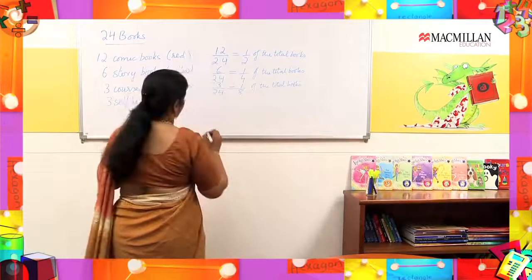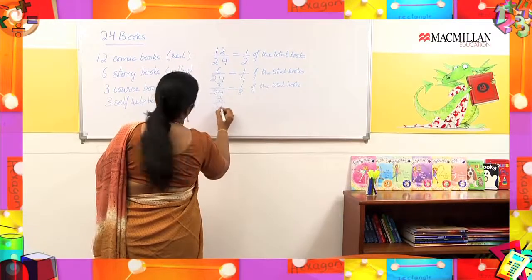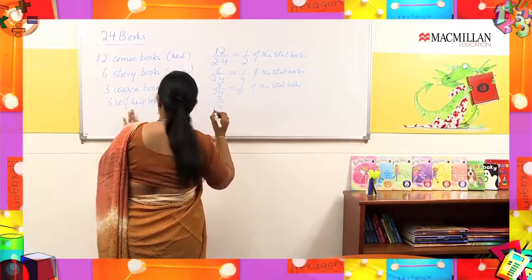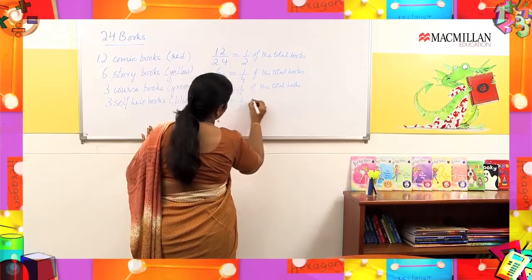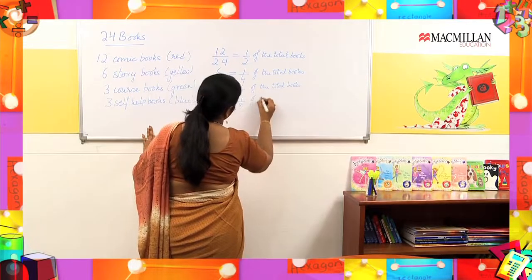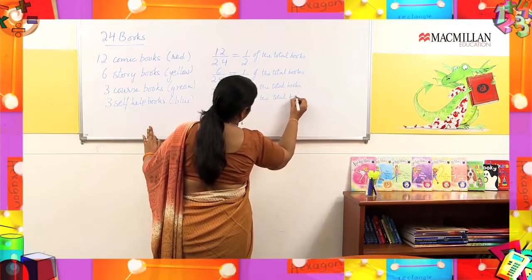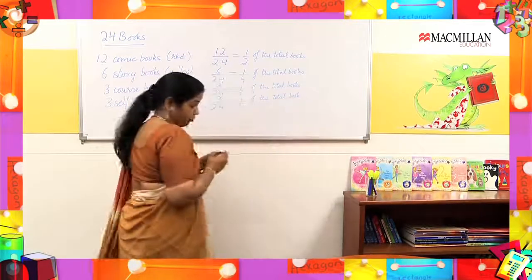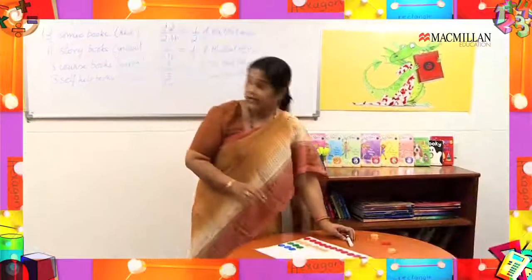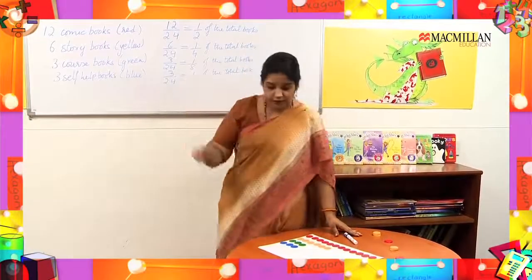Again, 3 by 24 — that is 1 by 8 — of the total books are self-help books. Now I can represent this data using a pie chart.